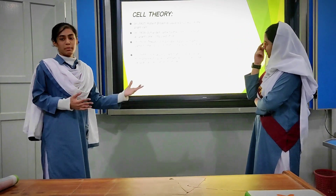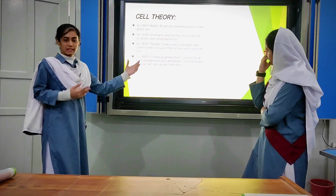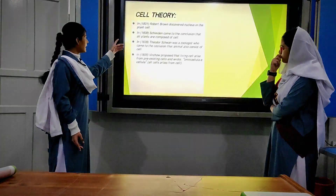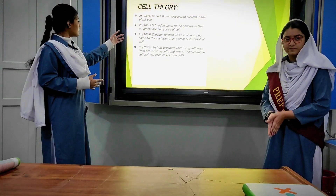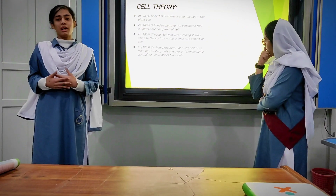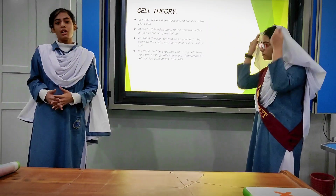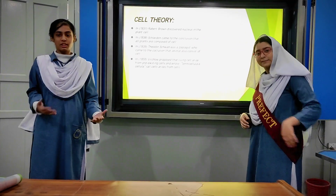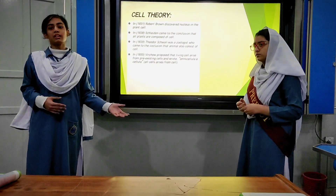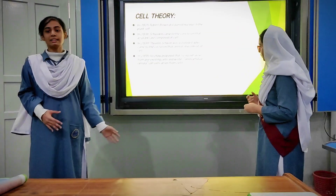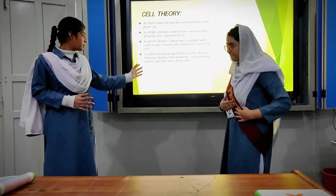Robert Hooke discovered cells using a microscope. There were four major scientists who also contributed to cell discovery. In 1831, Robert Brown discovered the nucleus in the plant cell. In 1838, Schleiden concluded that plants consist of cells. In 1839, Schwann concluded that animals also consist of cells. In 1855, Virchow proposed that living cells arise from pre-existing cells, and he wrote 'Omnis cellula e cellula,' meaning all cells arise from cells.